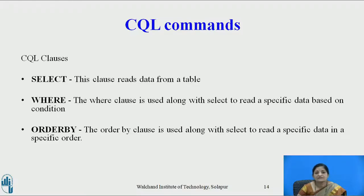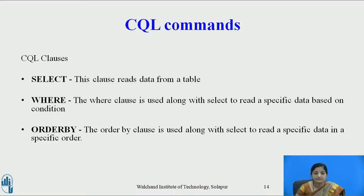Now we will see some Cassandra Query Language clauses used for querying. Select — this clause reads data from the table. Where — used along with select to read specific data based on certain conditions. Order by — used along with select to read specific data in a specific order.